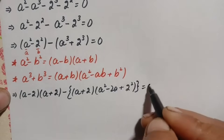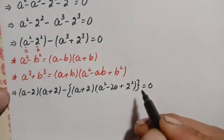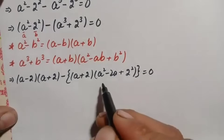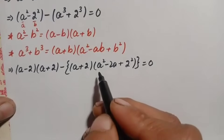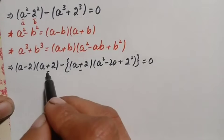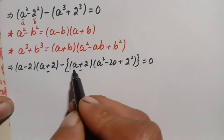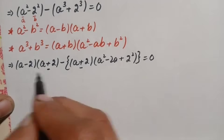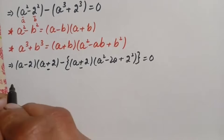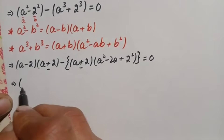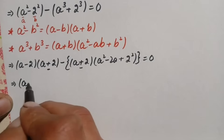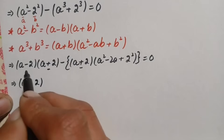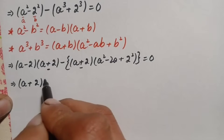Looking at these two expressions, a plus 2 is common in both terms. So we take out a plus 2 as a common factor. After factoring, only a minus 2 is left from the first term.